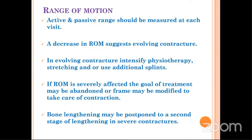Both active and passive range of motion should be measured at each visit. A decrease in ROM at subsequent visits indicates an evolving contracture. If contracture is evolving, rehabilitation is very important — stretching exercises, physiotherapy, and splints may be required. If severely affected, sometimes the goal of treatment may have to be abandoned to address the contractures. This can be corrected either by incorporating it into the ring or by postponing lengthening to the second stage.